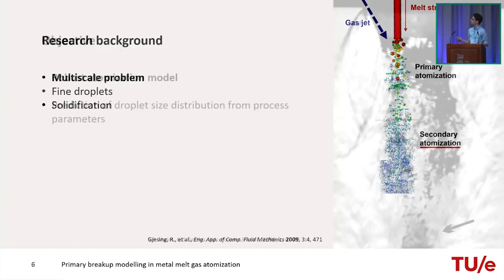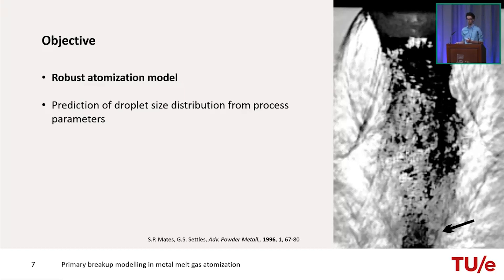The goal of the research is to create a robust model of the whole gas atomisation, with the primary atomisation being the main black box. From experimental pictures this is a very complex breakup flow, and little is understood about how process parameters influence it. The model aims to determine which process parameters significantly impact breakup behaviour, ultimately relating them to powder properties — particularly the particle size distribution, ideally as close to monodispersed as possible.